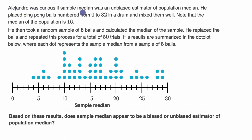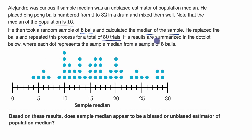Alejandro was curious if the sample median was an unbiased estimator of the population median. He placed ping pong balls numbered from zero to 32 in a drum and mixed them well. Note that the median of the population is 16. He then took a random sample of five balls and calculated the median of the sample. He replaced the balls and repeated this process for a total of 50 trials, summarized in the dot plot below where each dot represents the sample median from a sample of five balls.